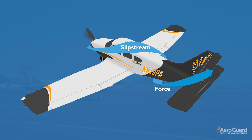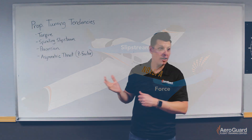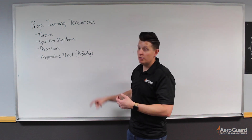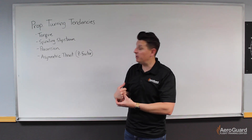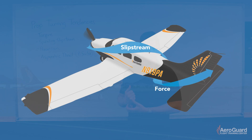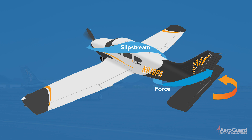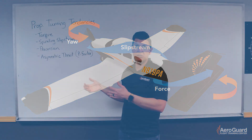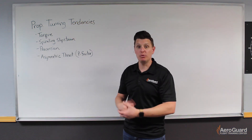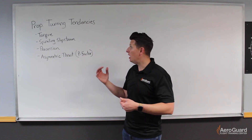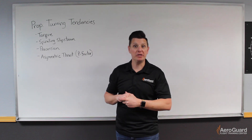As that rotation occurs, the majority of that force would strike one side of the vertical stabilizer more than the other. Specifically, because our propeller is rotating clockwise when viewed from the cockpit, it'll strike the left side of the vertical stabilizer more than the right, which would force the tail to rotate to the right, which would yaw the nose of the airplane to the left. The spiraling slipstream, while not a predominant force, may cause the airplane to yaw slightly to the left, especially in high-powered situations where a lot of prop wash is being developed.